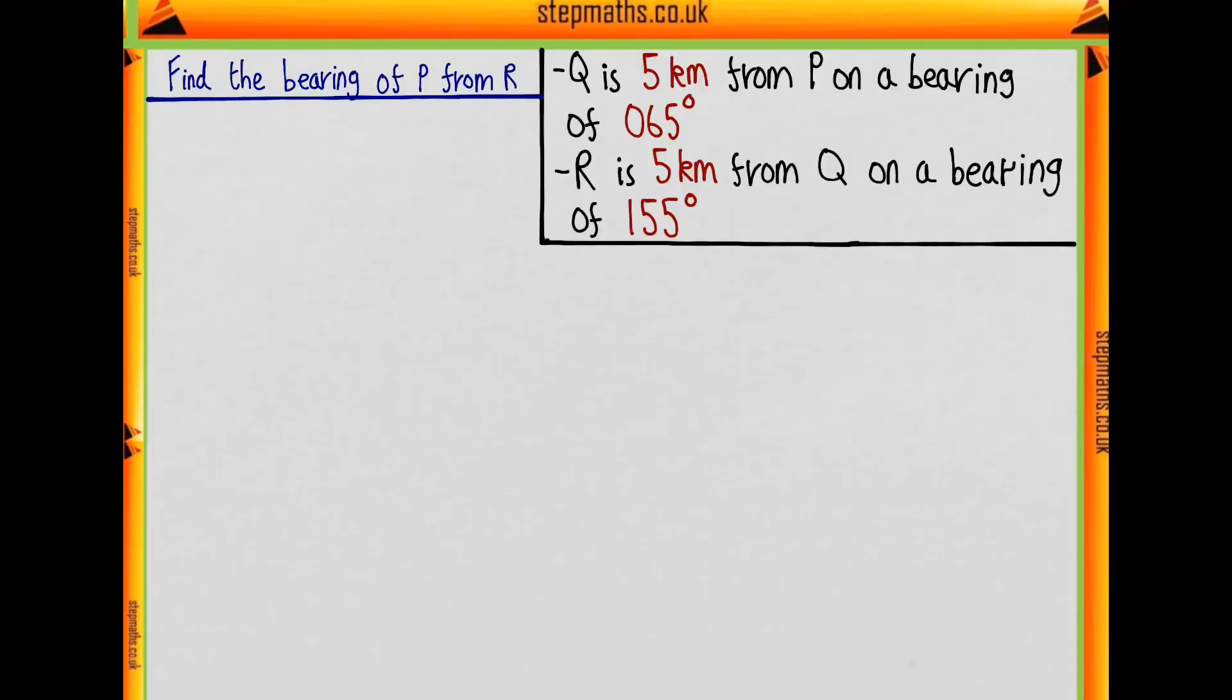So how do we go about this? We've got all this information here in a horrible form. Let's draw a diagram. Firstly, Q is five kilometers from P on a bearing of 65 degrees which looks like this. Our north arrow is from P, 65 degrees clockwise to Q, and then the length is marked as five.